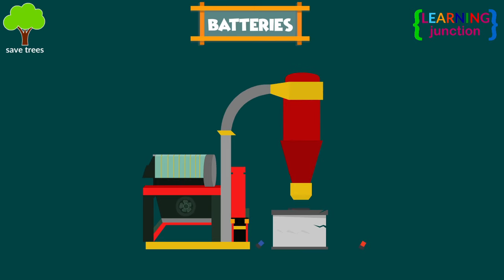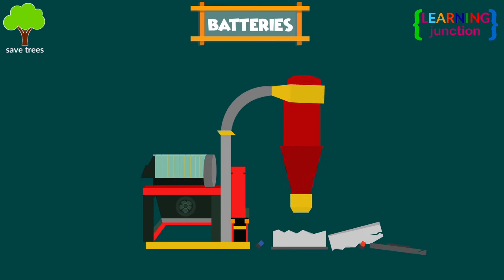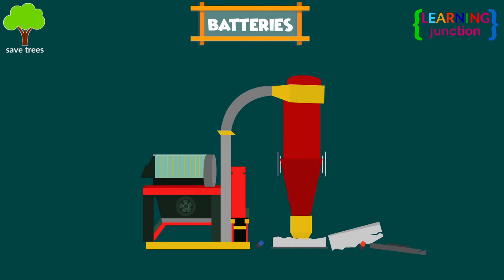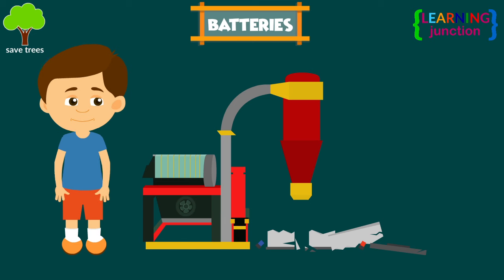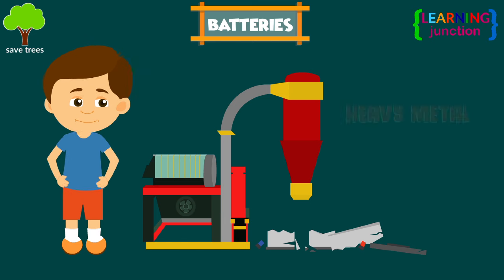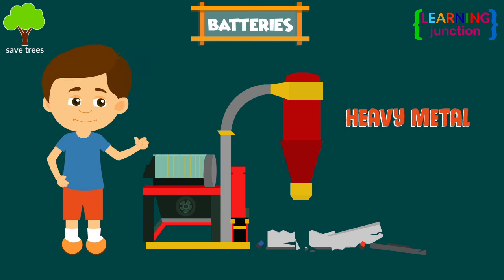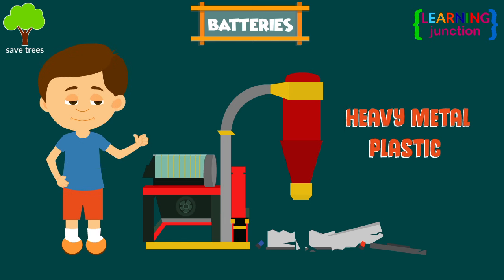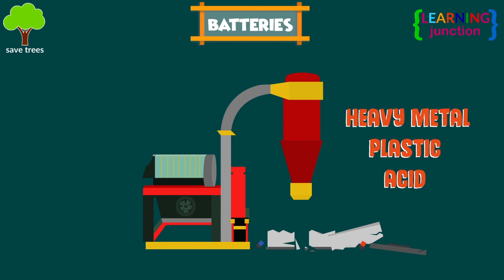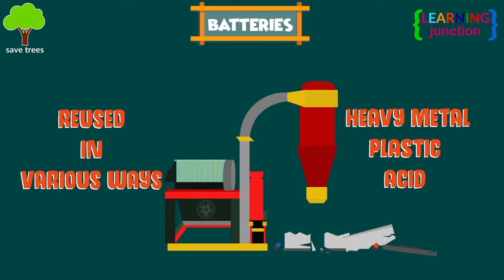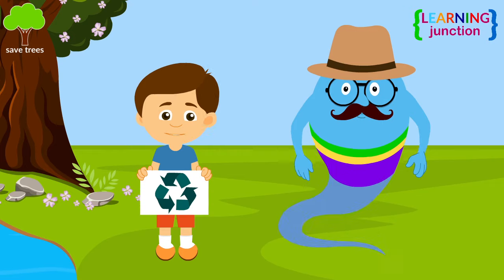Batteries. Batteries are crushed by high-speed hammers or shredders. It is first separated into its components: heavy metal, plastic and acid. Then it's reused in various ways.